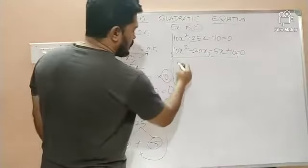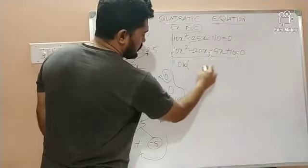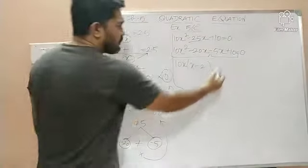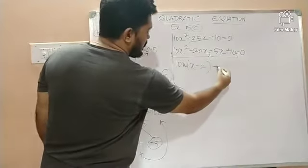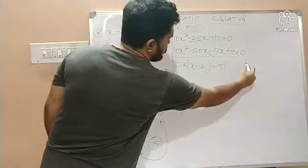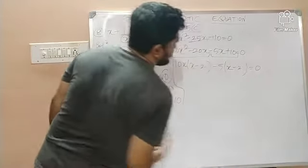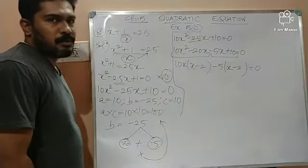What is common in these two? I think it is 10x. Inside the bracket, I will get x minus 2. And what is common in minus 5x plus 10? I think it is minus 5. Yes. So, inside the bracket, x minus 2, which is equal to what? 0.